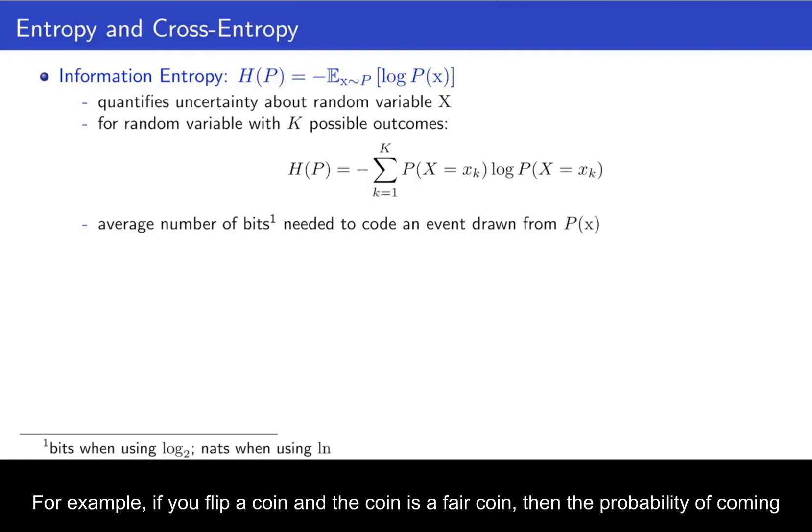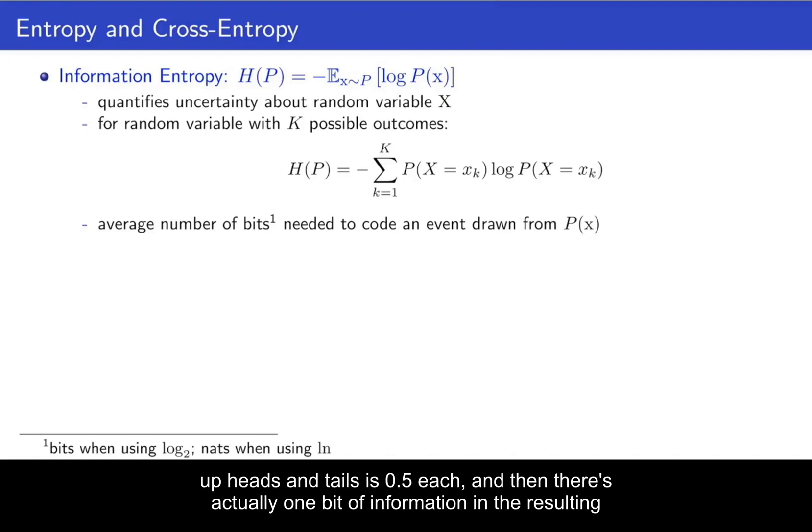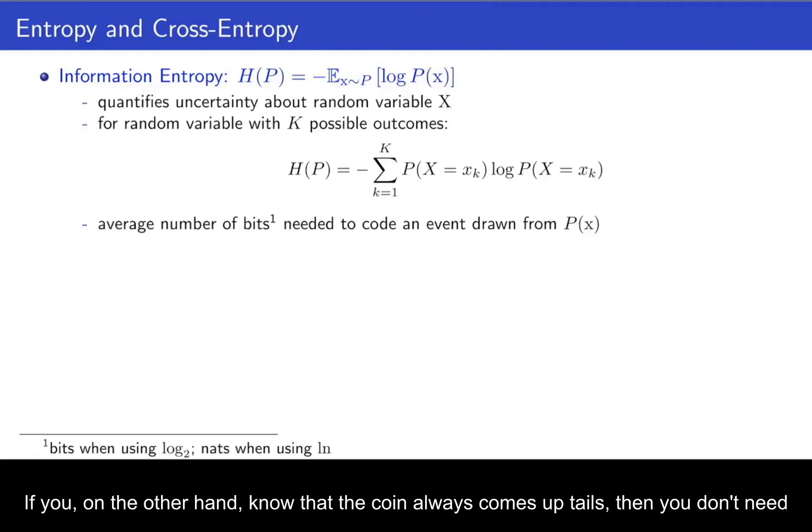So the entropy is the number of bits needed to code an event from a distribution P(x). For example, if you flip a coin and the coin is a fair coin, then the probability of coming up heads and tails is 0.5 each, and then there's actually one bit of information in the resulting event. If you, on the other hand, know that the coin always comes up tails, then you don't need any bits of information in order to encode that, but there's actually no information in the outcome, because you already know the outcome before you observe the event.